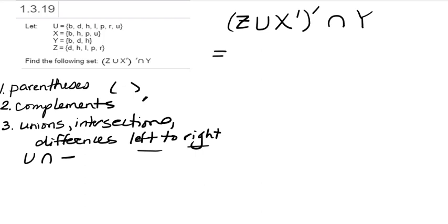In our problem, we have Z union X complement inside of parentheses. So I'm going to write down the actual set Z, which contains {d, h, l, p, r}, union with X complement. So X is {b, h, p, u}. We're going to want the complement of that, which means everything that's not in X but is in the universal set. And the rest I'm going to just leave in shorthand notation.